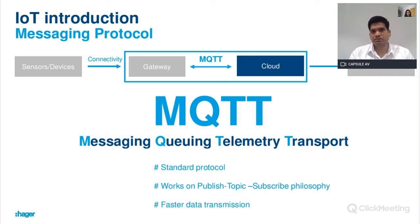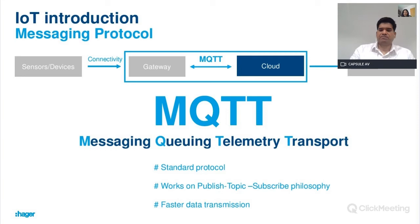In MQTT, any IoT sensor can publish data on the cloud, and another IoT sensor that needs the data on a specific topic can subscribe and access it.